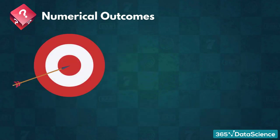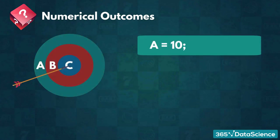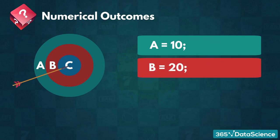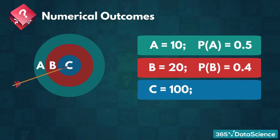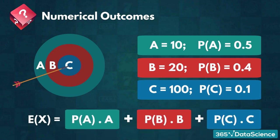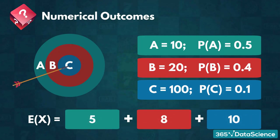For instance, you are trying to hit a target with a bow and arrow. The target has three layers: the outermost one is worth 10 points, the second one is worth 20 points, and the bullseye is worth 100. You have practiced enough to always be able to hit the target, but not so much that you hit the center every time. The probability of hitting each layer is: 0.5 for the outermost, 0.4 for the second, and 0.1 for the center. The expected value would be 0.5 × 10 + 0.4 × 20 + 0.1 × 100, which equals 5 + 8 + 10, or 23.